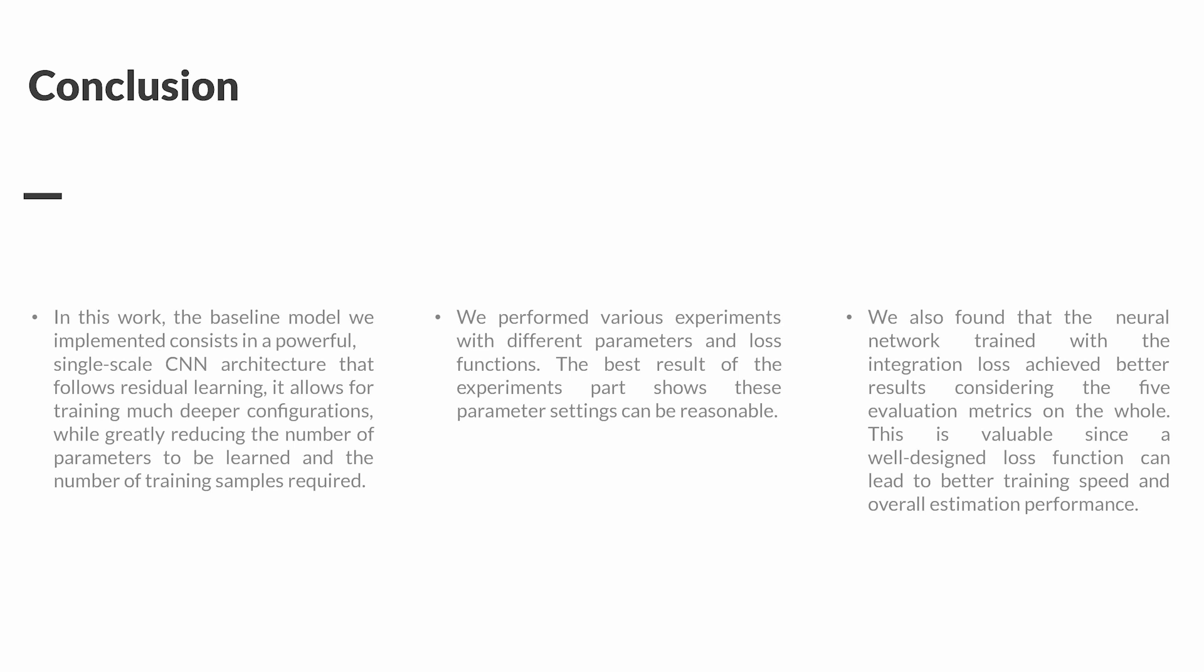In conclusion, the baseline model we implemented consists of a powerful, single-scale CNN architecture that follows residual learning. It allows for training much deeper configurations while greatly reducing the number of parameters to be learned and the number of training samples required. We performed various experiments with different parameters and loss functions. The best result of the experiments shows these parameter settings can be reasonable. We also found that the neural network trained with the integration loss achieved better results considering the five evaluation metrics on the whole. This is valuable since a well-designed loss function can lead to better training speed and overall estimation performance.